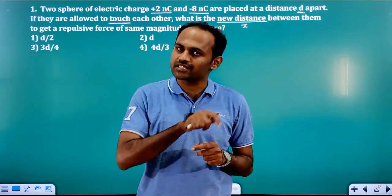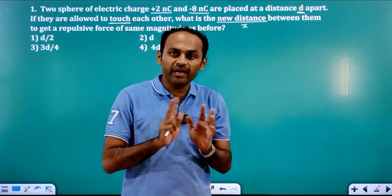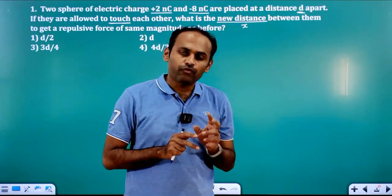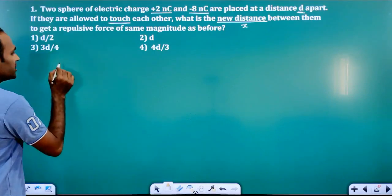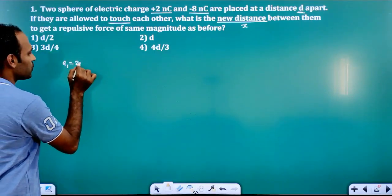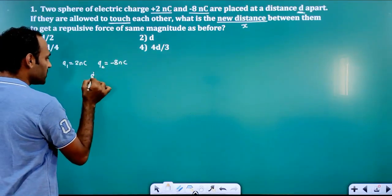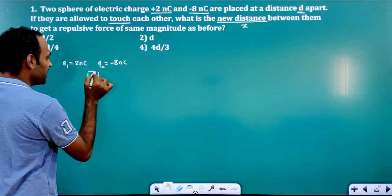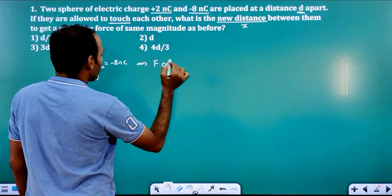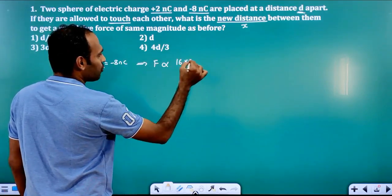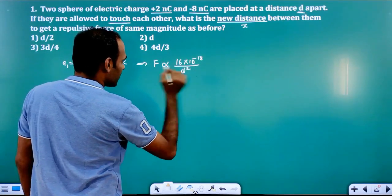The charges are changing and the distance is changing, but the medium is not changing. So force before touching and force after touching must be equal. Initially, charges are plus 2 nanocoulomb and minus 8 nanocoulomb at distance D. Force is directly proportional to 2 into 8, that is 16, into 10 raised to minus 18, divided by D square.